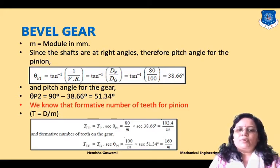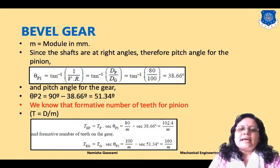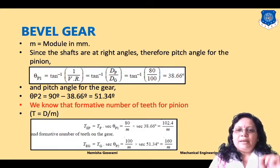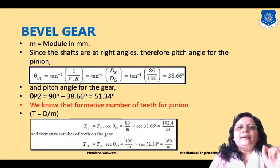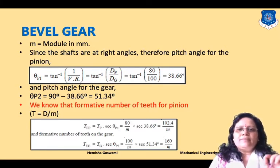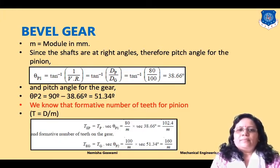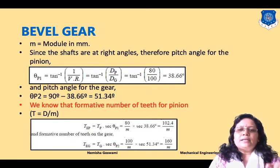Next, we calculate the formative (equivalent) number of teeth. Using the relation t = d/m (module = diameter/number of teeth), the equivalent number of teeth for the pinion is: Tep = (dp/m) × sec θp1, and for the gear: Teg = (dg/m) × sec(51.34°). These equations will be used in subsequent steps.